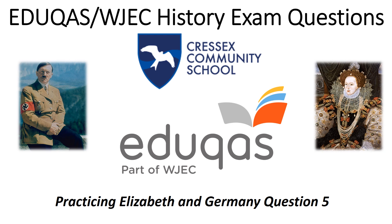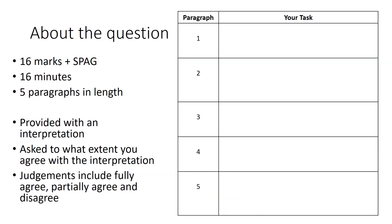Hello everyone. Today we're going to be looking at how to answer an Elizabeth or Germany question number five for the new updated EDUQAS and WJEC history exam board. It's worth 16 marks with some SPAG marks allocated as well, and that means we will get a total of 16 minutes to work on this question using a total of five paragraphs.